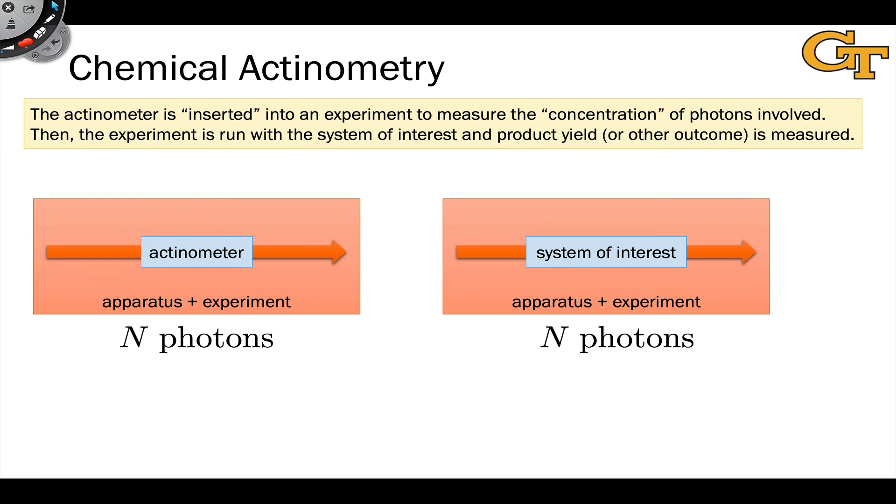The potassium ferioxalate actinometer is but one of many options for chemical actinometry. However, I'll just in closing say that this is a very commonly applied method still for measuring quantum yields because of this issue of the difficulty of counting photons.